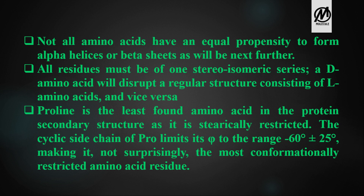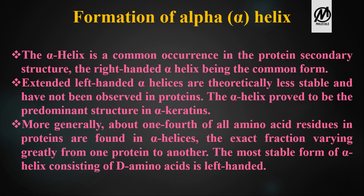Not all amino acids have an equal propensity to form alpha helices or beta sheets. If a D-series is continuous and an L-amino acid is introduced, it will disrupt the structure, or vice versa. Proline is the least commonly found amino acid in protein secondary structures because it is sterically restricted. Its cyclic pyrrolidine side chain limits its phi to the range of minus 60 to plus/minus 25 degrees, making it the most conformationally restricted amino acid residue in the Ramachandran plot.